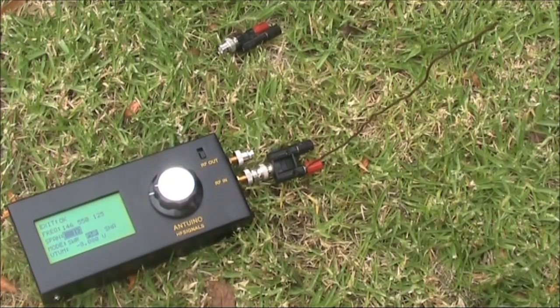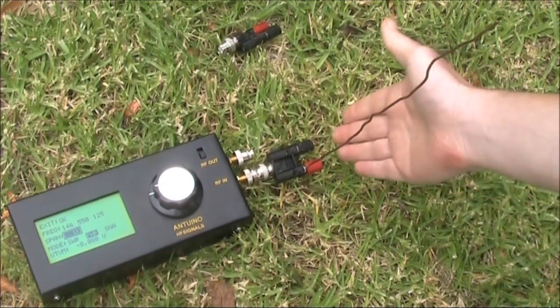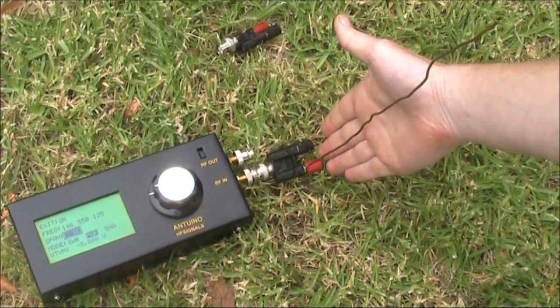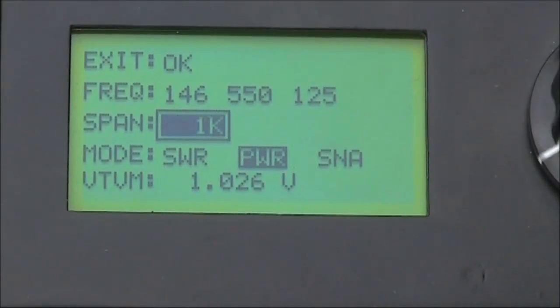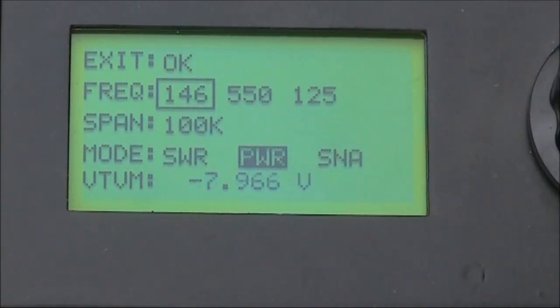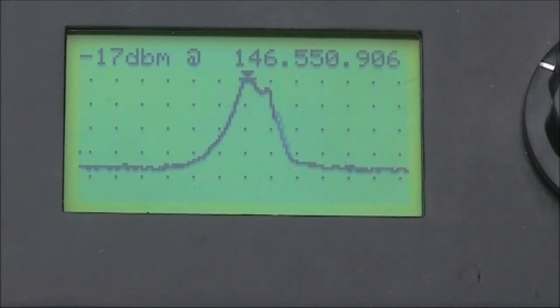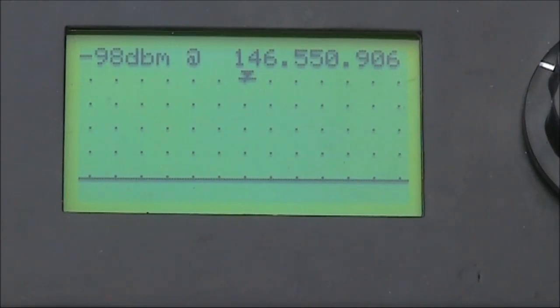Next thing we'll try is the Antrino as an RF field strength meter. I've got some stiff metal wire connected to the RF input connection. I've set it in the power mode. The span will make it 100kHz. We're on a frequency in the 2m band. So we'll press OK. This is 2m FM. I'll just talk into the microphone. So from that you could see it getting broader when I spoke and caused frequency modulation to happen.